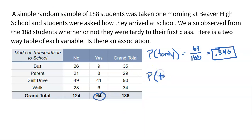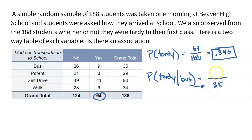Now let's look at kids that ride the bus. I'm still focusing on being tardy — I'm not changing what I'm looking at. The condition of riding the bus changes my denominator to the 35 kids who rode the bus. Of those 35 kids, 9 were tardy to their first block class. 9 divided by 35 is 0.257. If you rode the bus, you are less likely to be tardy — 25.7% compared to 34% overall. The bus should get you to school on time.